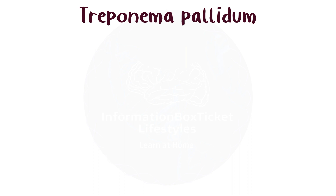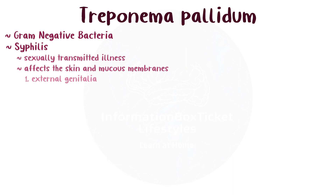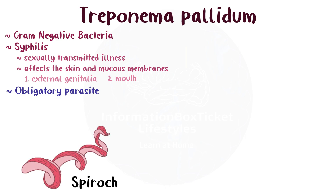Despite having a different cell envelope than other gram-negative bacteria, Treponema pallidum is nonetheless classed as a gram-negative bacterium. As an obligatory parasite, Treponema pallidum is a kind of bacterium that cannot exist on its own outside of a living organism — more precisely, outside of an individual's body. They are part of a class of bacteria known as spirochetes,